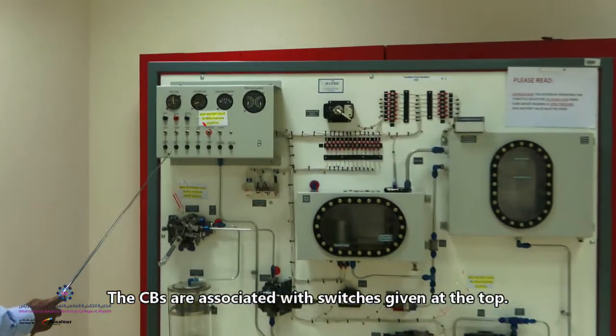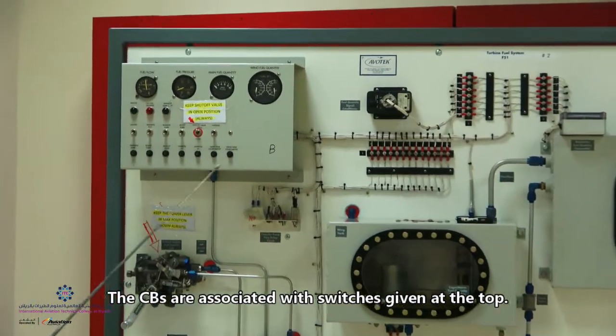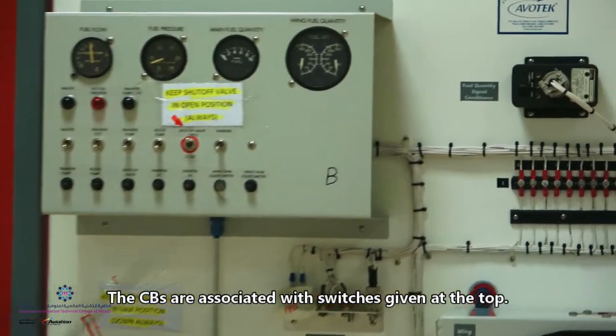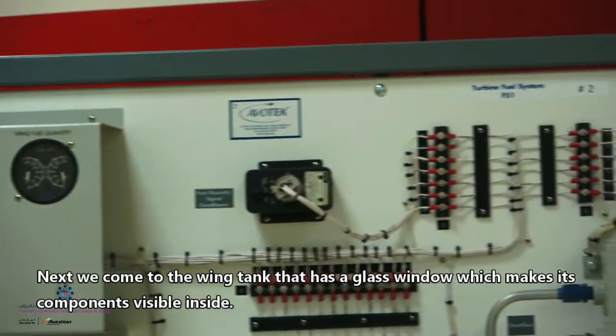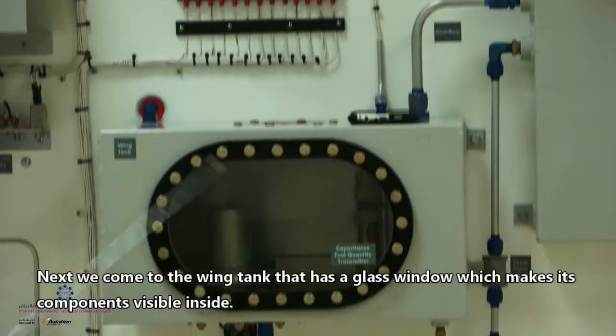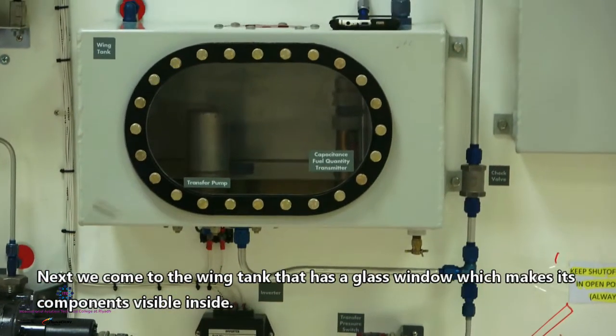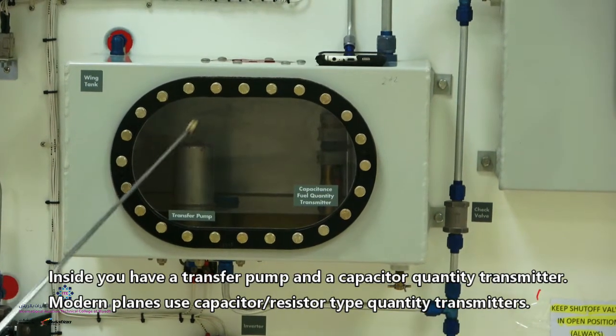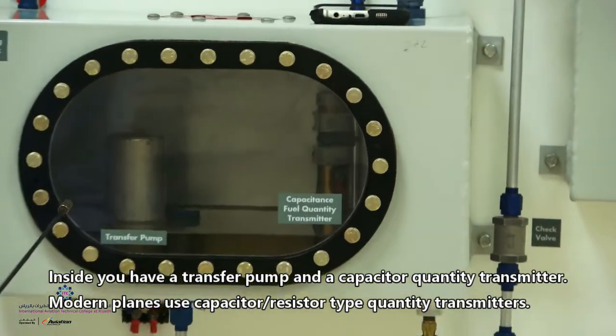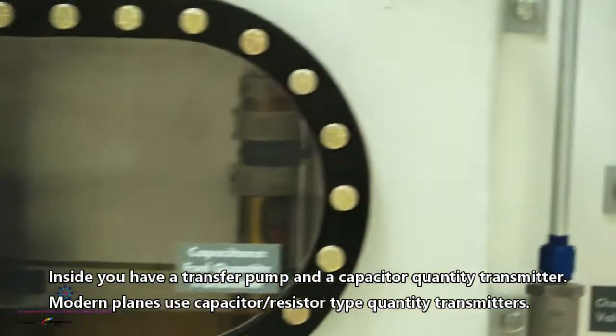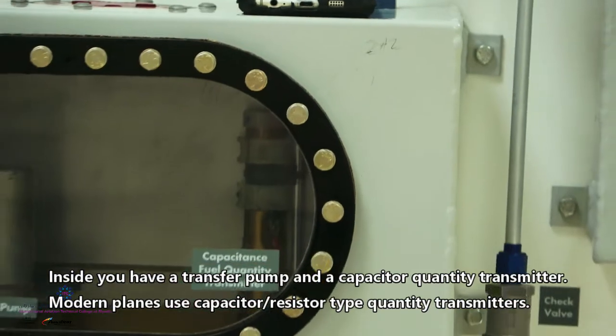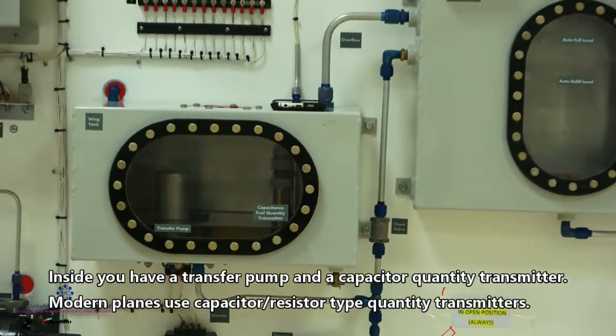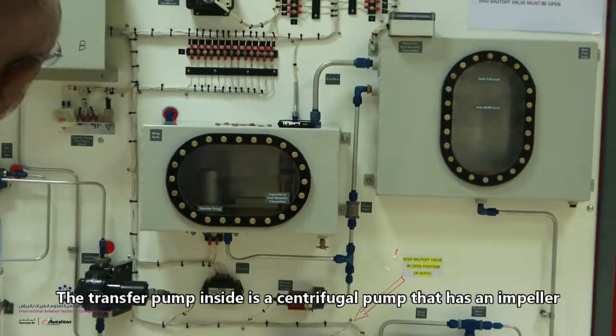And here you see we have circuit breakers. All these circuit breakers are associated with the switches at the top. Next, we come to the wing tank. This wing tank, as you see, has a window and this window is very clear that you can see the components inside. Inside you have a pump, a transfer pump, and you have also a capacitor quantity transmitter. This capacitor quantity transmitter, most of the modern aircraft use the capacitor and the resistor are the same.